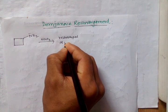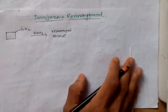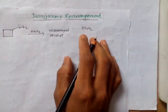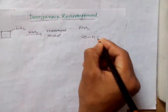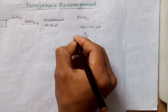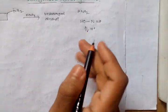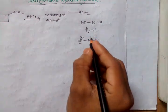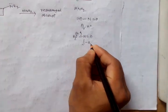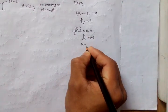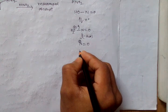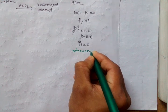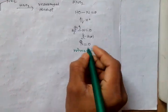Here the role of HNO2 is very important. HNO2 in presence of H+ forms OH protonated, and after removing water forms the nitrosonium ion. This nitrosonium ion acts as an electrophile.